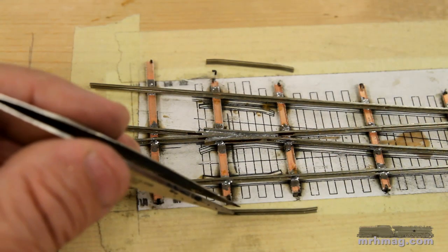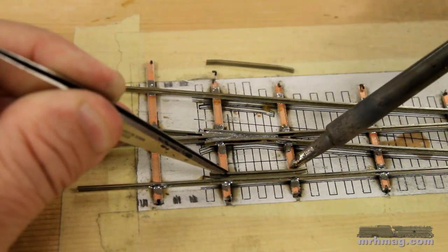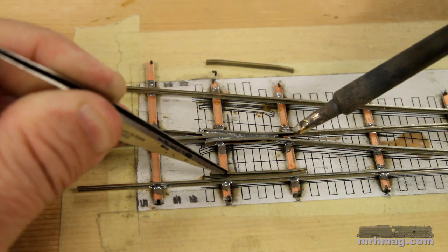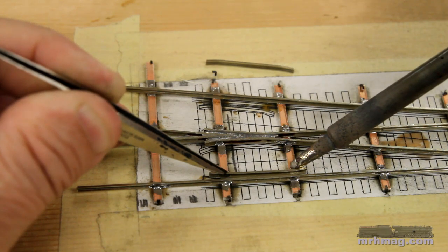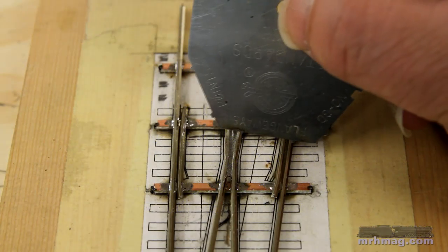Guardrails are relatively easy to make and install. Cut them out, bend the ends, and solder them in place.